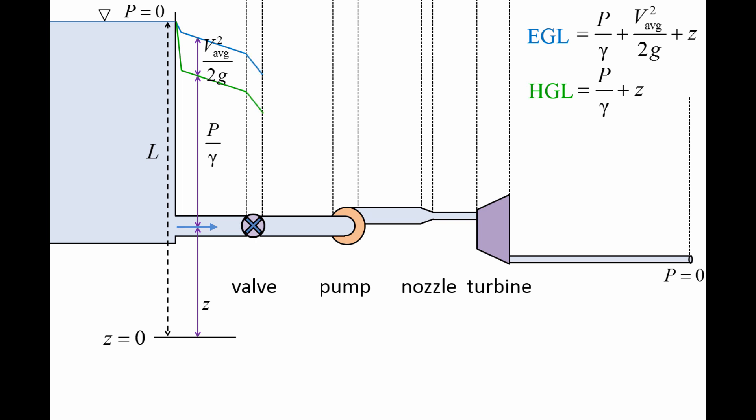Both the EGL and HGL curves drop rapidly at the valve since valves usually induce separated flow, causing a rapid loss in pressure head. After the valve, the EGL and HGL curves continue to decline due to pipe friction.